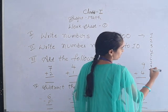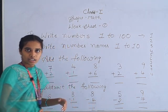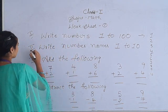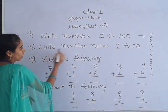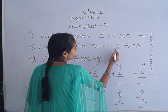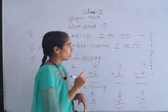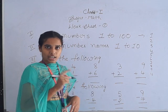Next is the second bit. Write number names one to ten. For the first bit, we wrote numbers: one, two, three, four, five. For number names, you have to write in words.